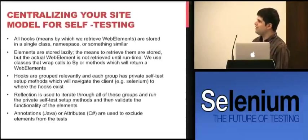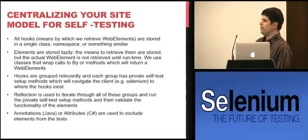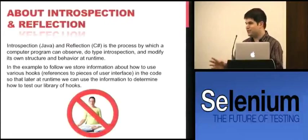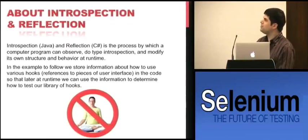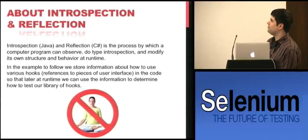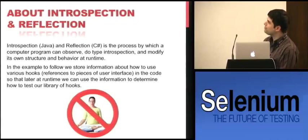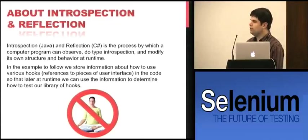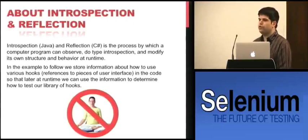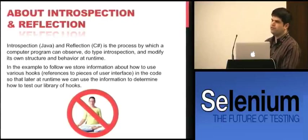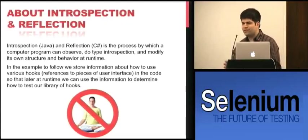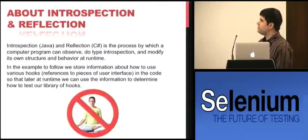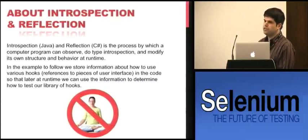That's done using reflection. Reflection and introspection is the process by which a computer program can observe, do type introspection, and modify its own structure and behavior at runtime. In languages like Java and C#, you can look at a class and ask things like: who are your members, are they private or public, what methods are underneath them. In the example that follows, we store information about the hooks in our code, then retrieve it at runtime and test them.